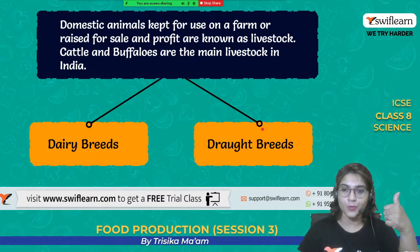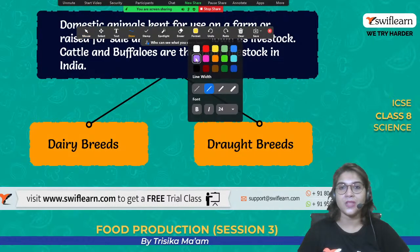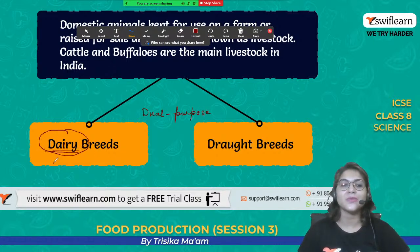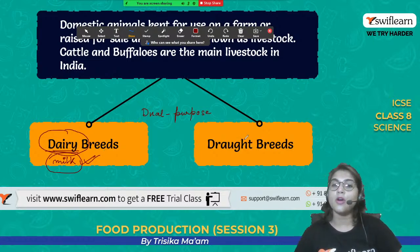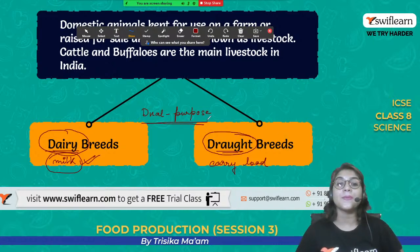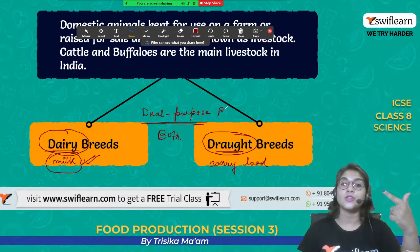We can divide breeds of cows into: dairy breed (produces most milk), drought breed (carries loads from one place to another), and dual purpose breed (both milk production and load carrying). Dairy is related to milk, so breeds which produce most milk come under dairy breed. Dual purpose means they do both — they can produce milk as well as carry load.